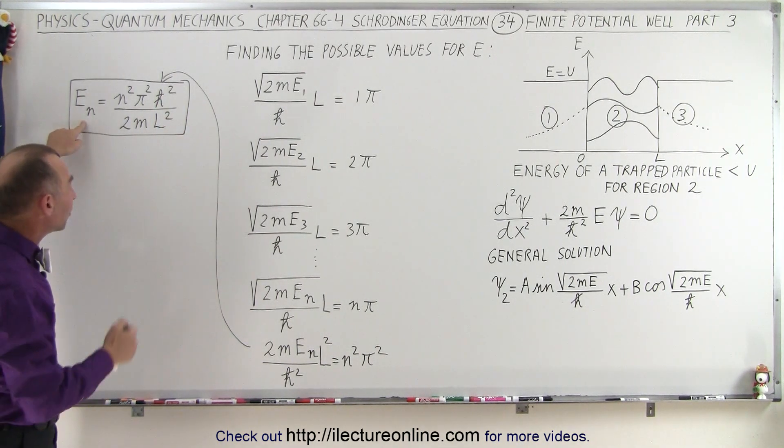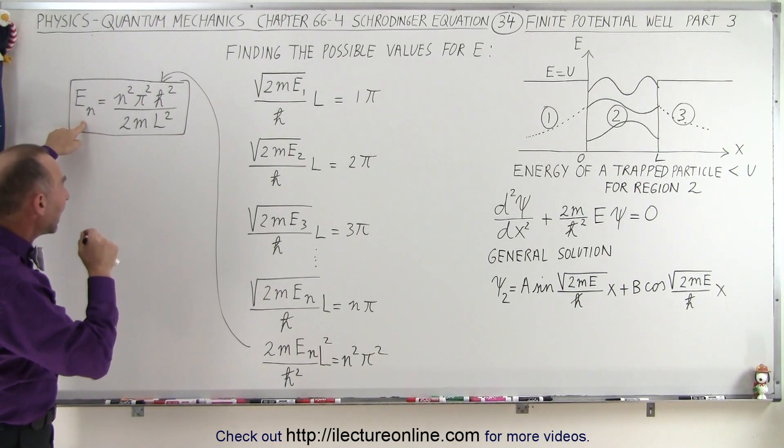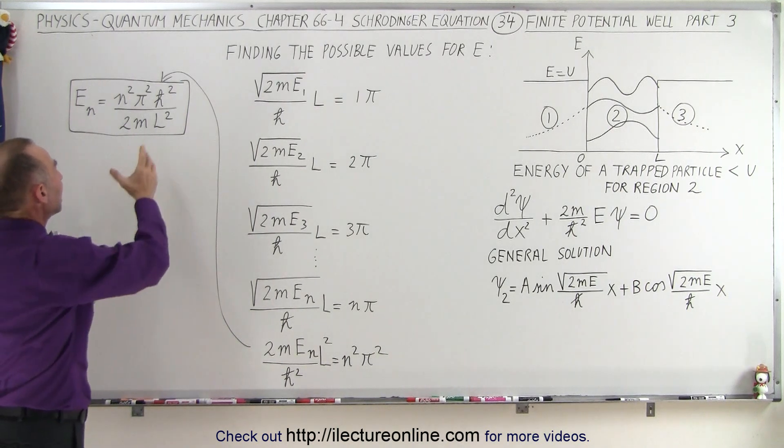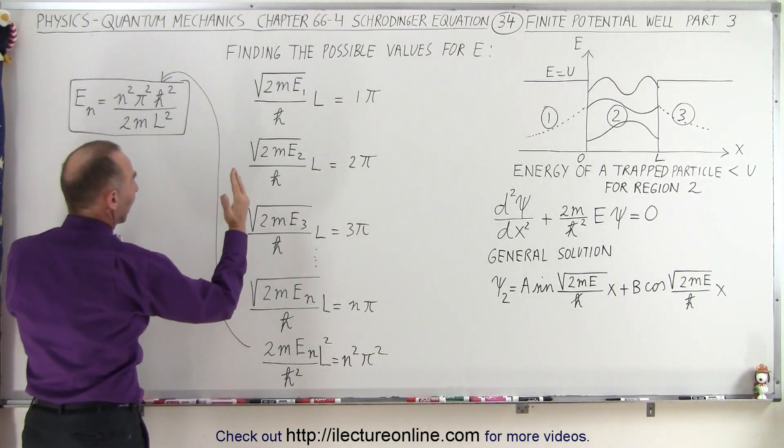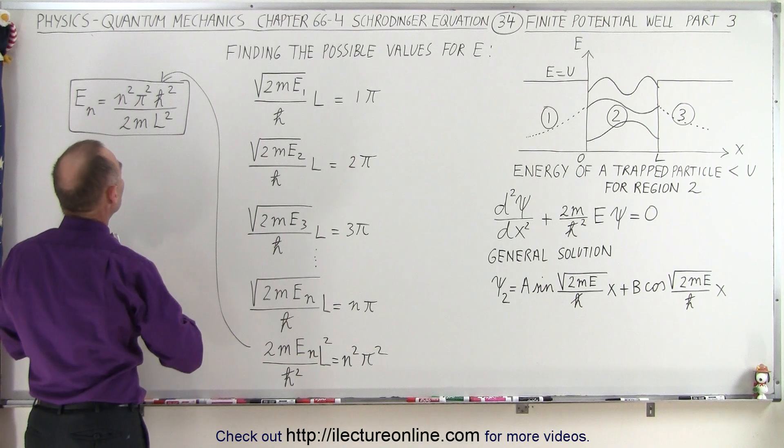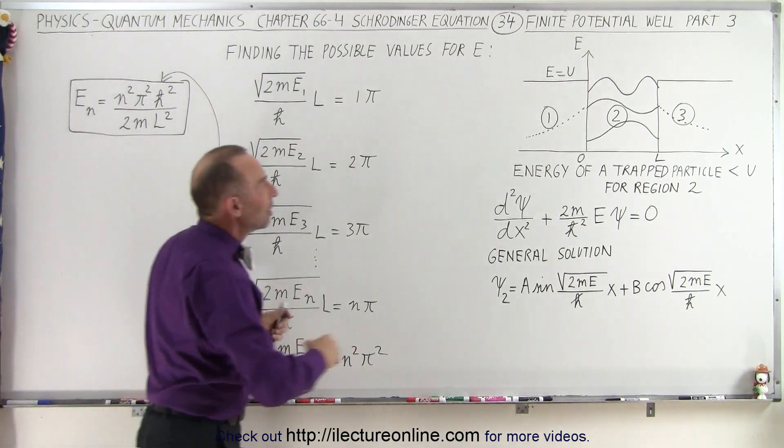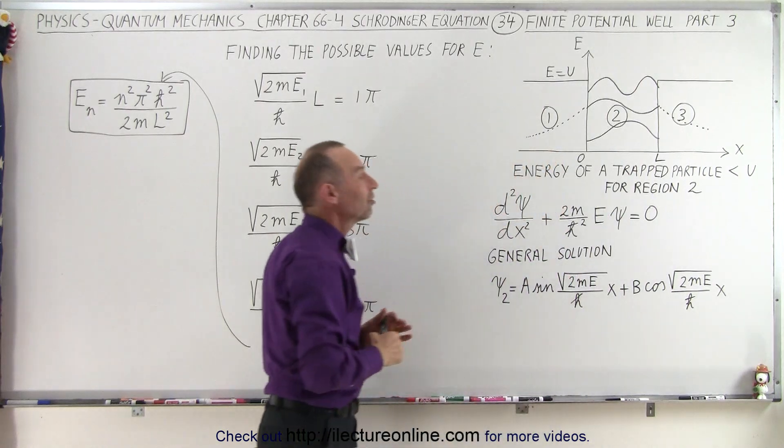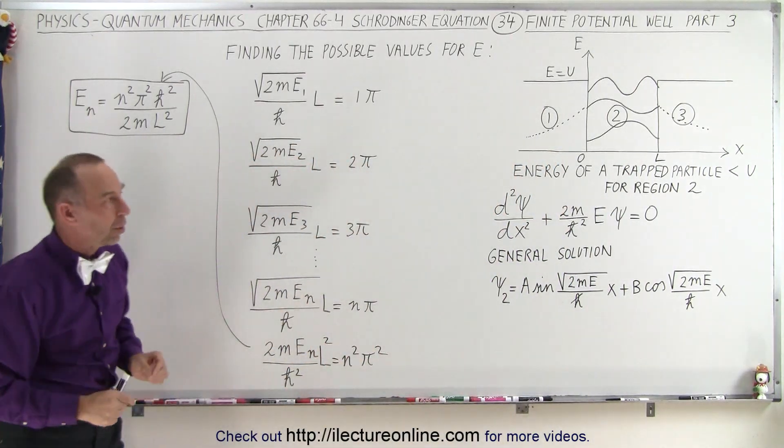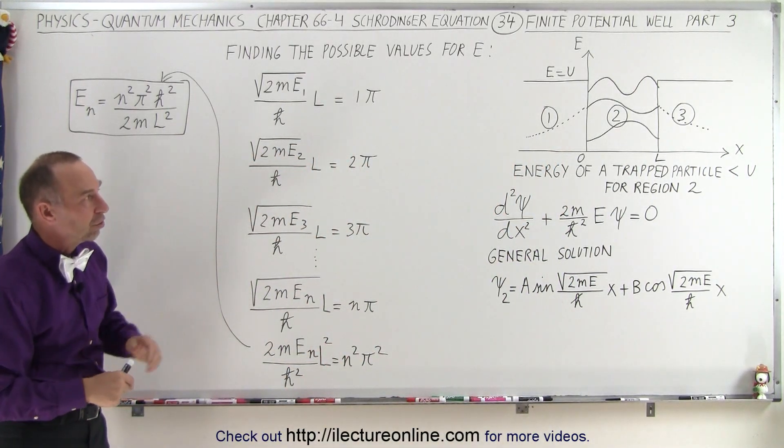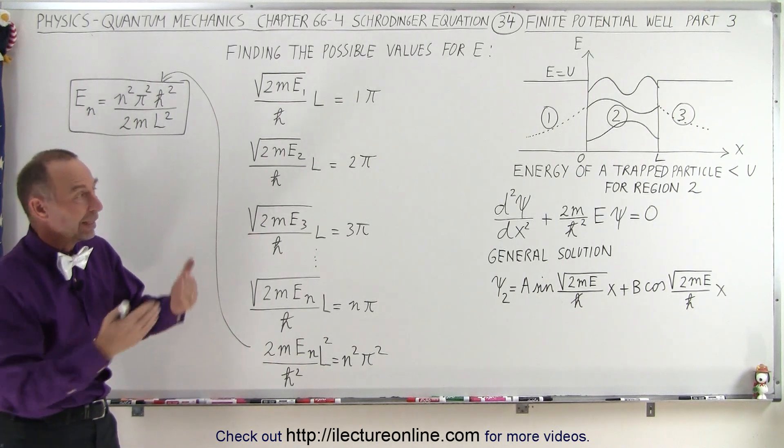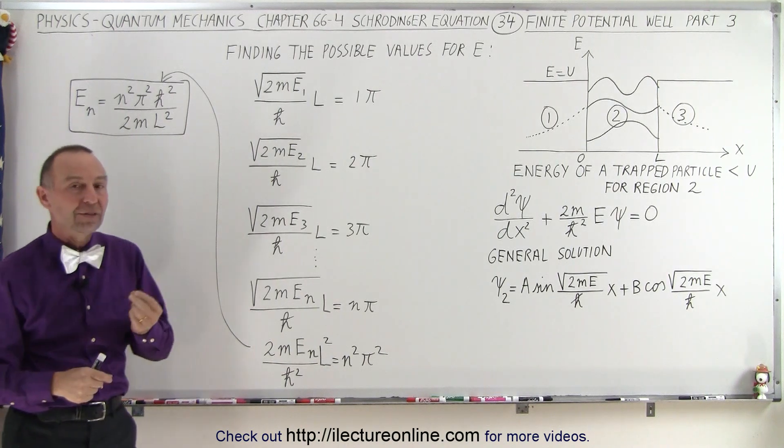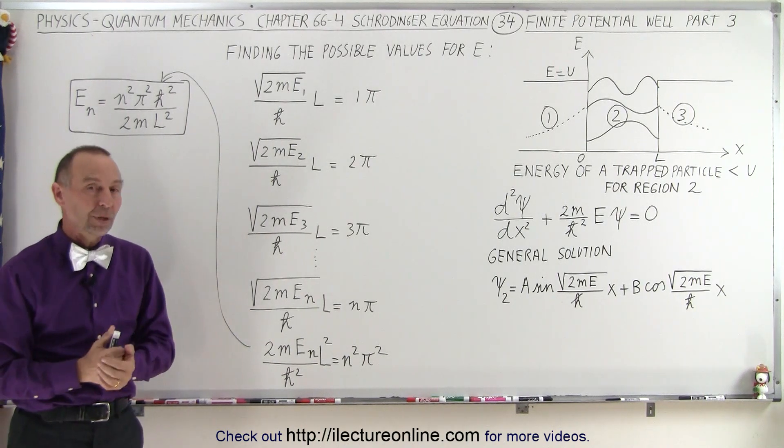Now we have very distinct values that the energy of the particle can have inside region 2, which is defined by the mass of the particle and the length of the well. That will give us these very specific forms of the sinusoidal equations inside region 2 that can match up with the exponentially decaying functions in region 1 and region 3. By necessity, these are the only values that the particle can have in terms of energy inside region 2.